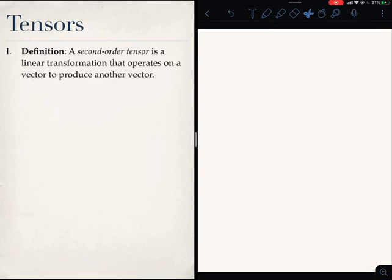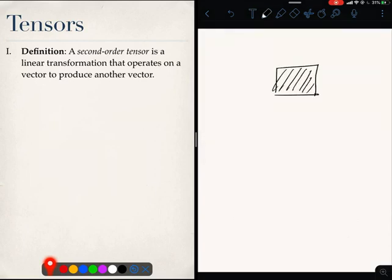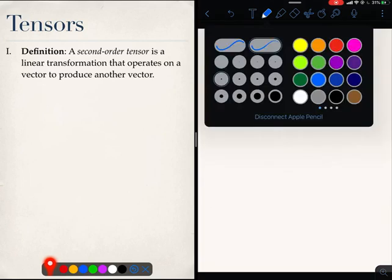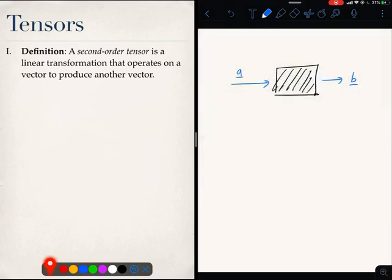So now we come to the main focus of today's lecture, which are tensors. A tensor is defined thus: A second-order tensor is a linear transformation that operates on a vector to produce another vector. You can think of a tensor as being a black box into which vectors are entering and vectors are going out. That is what a tensor is, a second-order tensor. And the only limitation is that this relationship is linear.